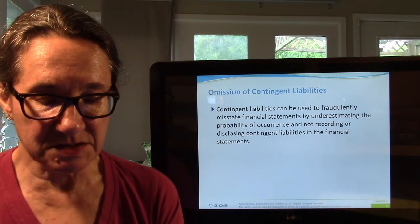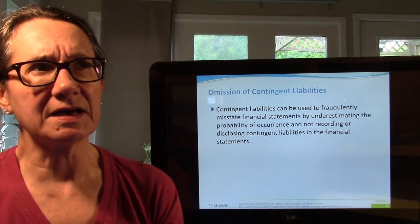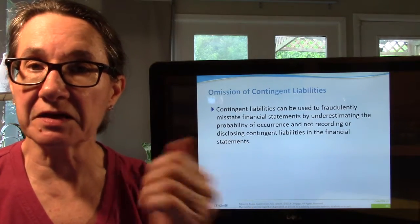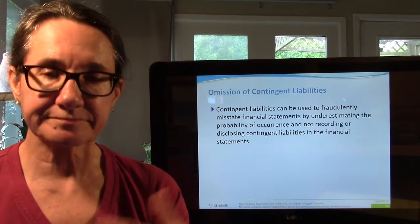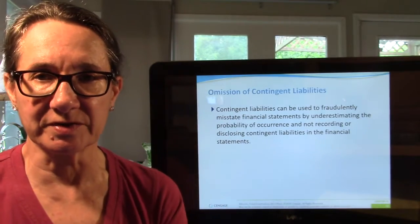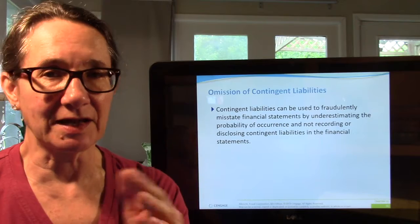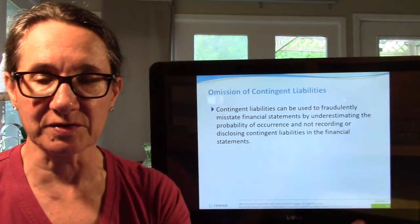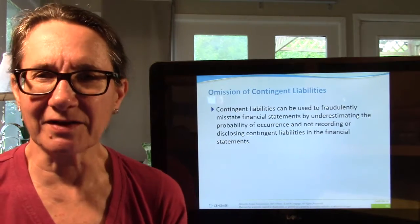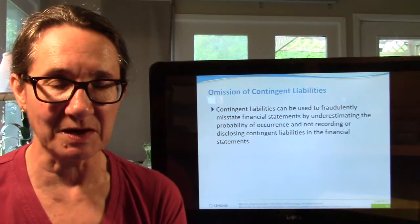Contingent liabilities are something you may have to pay — particularly lawsuits. If you're being sued, your liability is contingent upon the outcome of that lawsuit. Depending on how likely you are to lose and how much it will be, accounting rules require you to put it either in the footnotes or as a liability on the balance sheet. Fraudsters just don't do that, because how would auditors know you're being sued? They'd have to go find the documents with the lawyers. So a lot of times they just leave it off.